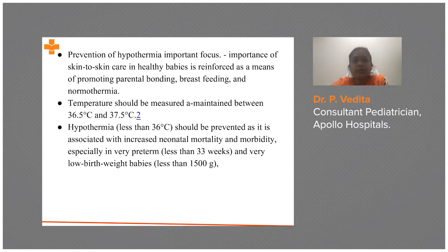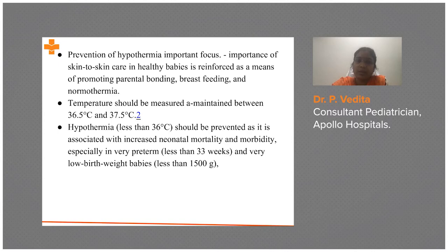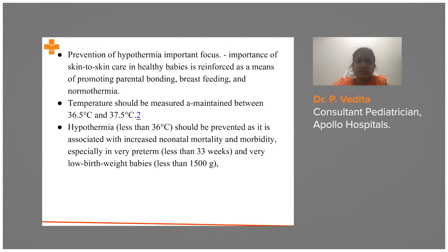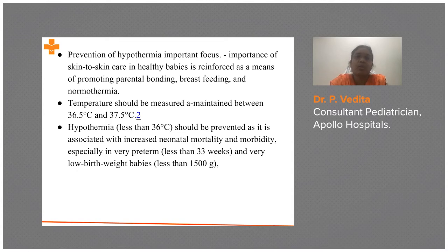Skin-to-skin care has been reinforced since 2015. It helps in promoting parental bonding, breastfeeding, and normothermia of the baby — three key benefits. Regarding temperature, it is now strongly recommended that the temperature of the baby should be maintained between 36.5 to 37.5 degrees Celsius. Hypothermia, defined as less than 36 degrees Celsius, requires immediate action.